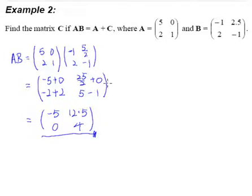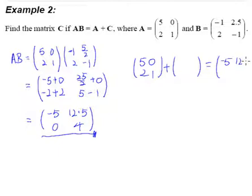We know that AB equals A plus C, since the left hand side equals the right hand side. Therefore, matrix A (5, 0, 2, 1) plus matrix C will give us the same answer: negative 5, 12.5, 0, and 4.